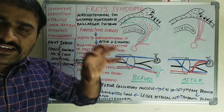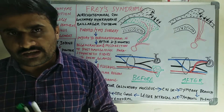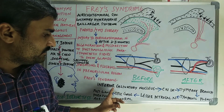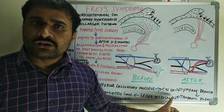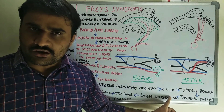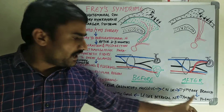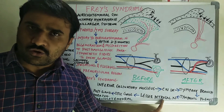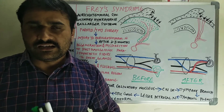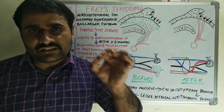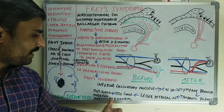The secretomotor, that is parasympathetic nerve supply to the parotid gland, starts in the inferior salivary nucleus, then travels through cranial nerve nine (glossopharyngeal nerve), from that the tympanic branch, tympanic plexus, then the lesser petrosal nerve, and it relays in the otic ganglion. From the otic ganglion, post-ganglionic parasympathetic fibers travel to the parotid gland through the auriculotemporal nerve.